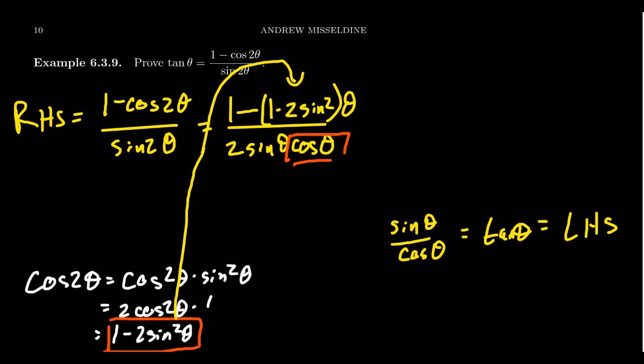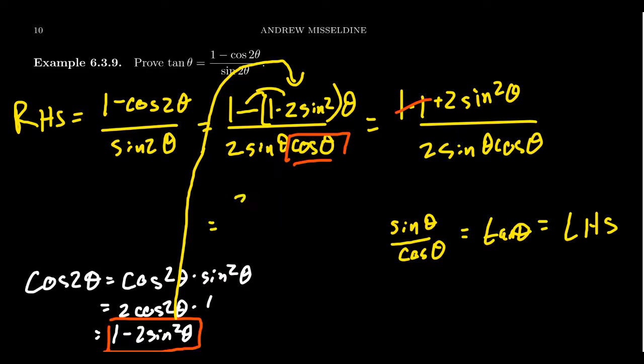So then you get the 1. Well, let's distribute this negative sign next. So we end up with 1 minus 1 plus 2 sine squared theta over 2 sine theta cosine theta. And now we can start to see how things are going to unravel here. You get 1 minus 1, they cancel each other out. We're next going to get 2 sine squared theta over 2 sine theta cosine theta.